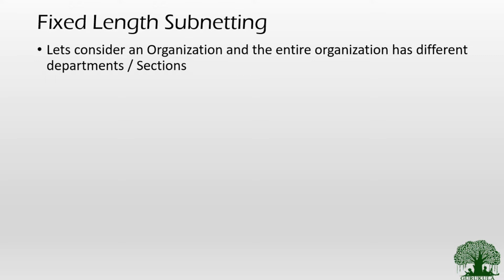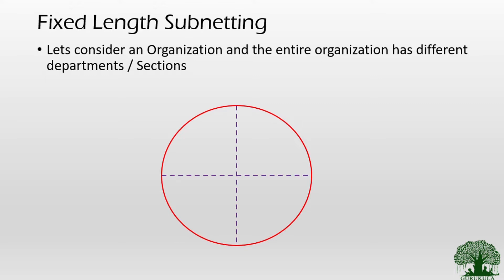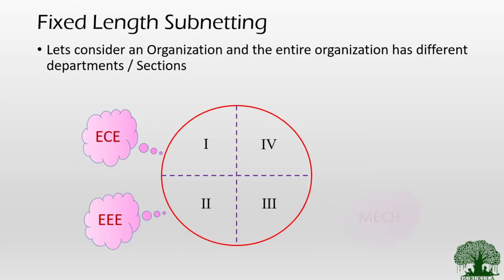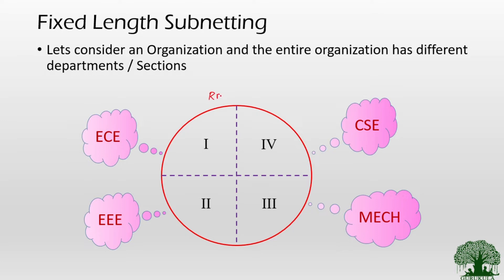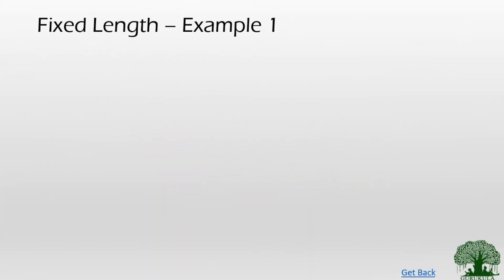Consider an organization where the entire organization is divided into departments and sections. For example, this is an entire organizational space classified into four departments or four sections. If this is an engineering section, we have four departments: ECE, triple E, mechanical, and CSE. So dividing an entire college — let's take RMK CET, which is our college — into four departments. We'll understand with an example because theoretical perspective alone will not help us understand fixed length subnetting.